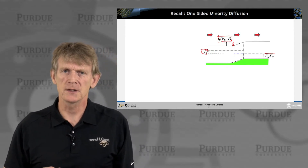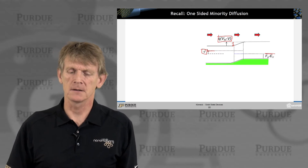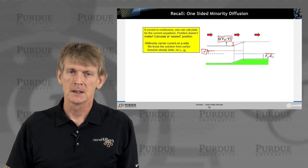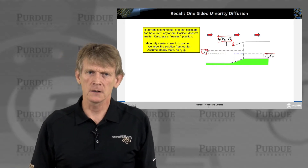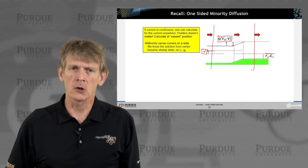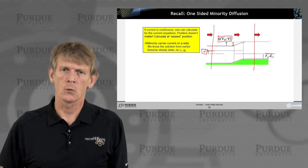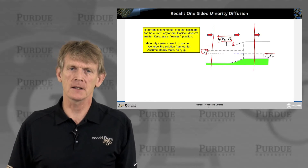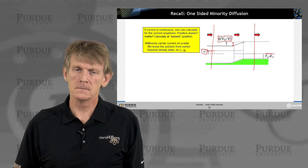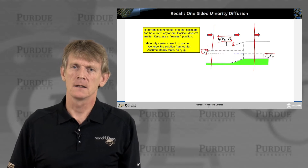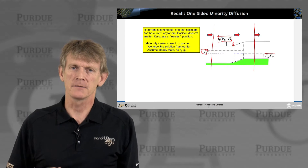We will expect to see some current flow — hole flow from the left and electron flow from left to right in this coordinate system. I can calculate current anywhere as a cross section of this device. As long as current is continuous, it doesn't matter where I compute it. So I'm going to pick a site where I can easily compute this current, based on minority carrier injection given a boundary condition.